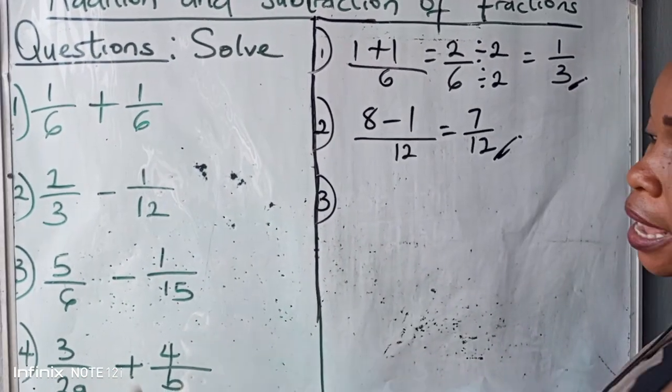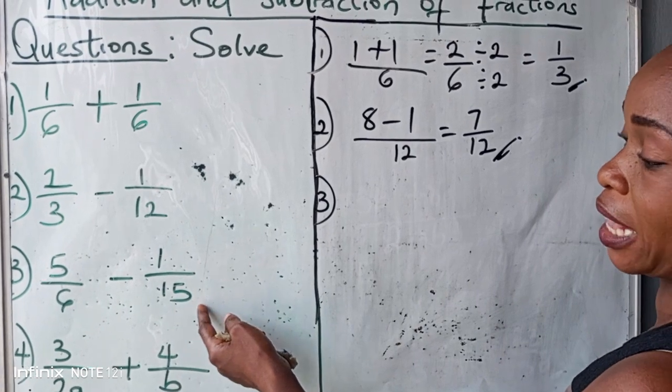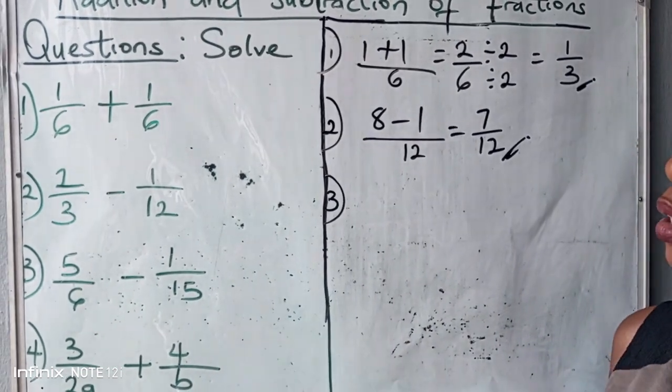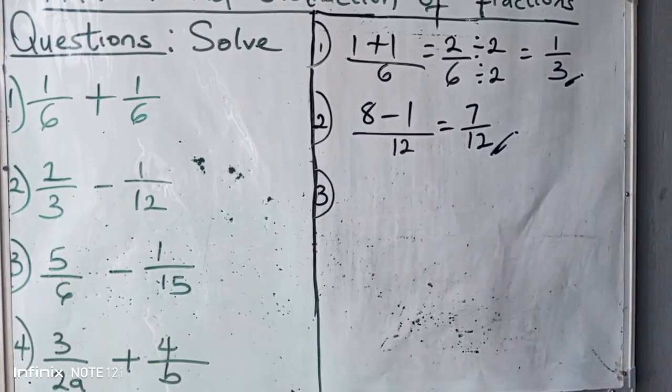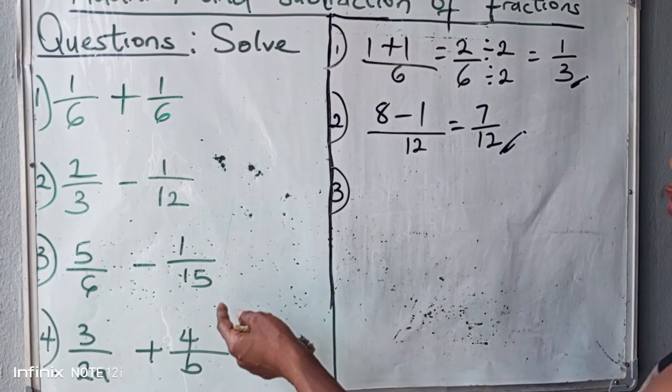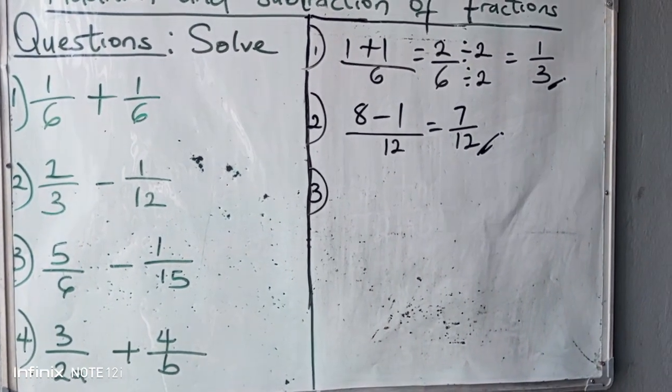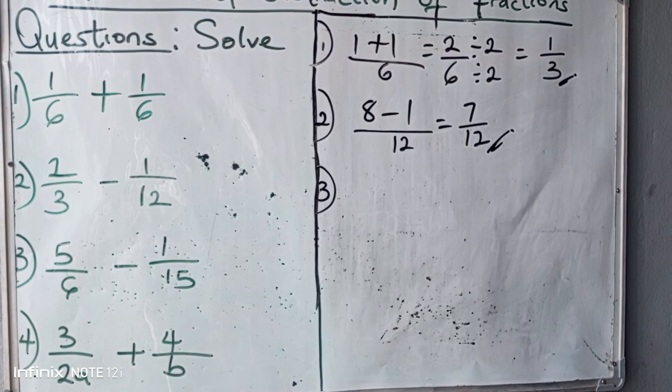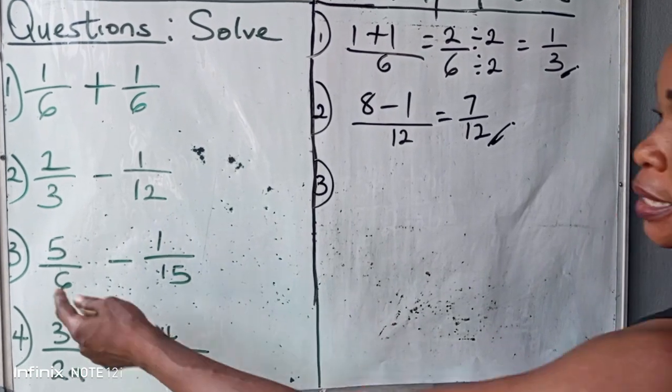Our denominators here are six and fifteen. Fifteen is not a multiple of six. So what do we do? And obviously, fifteen and six, there are two different numbers. So that leads us to the third principle where we have to write out the multiple of six and write out the multiple of fifteen.